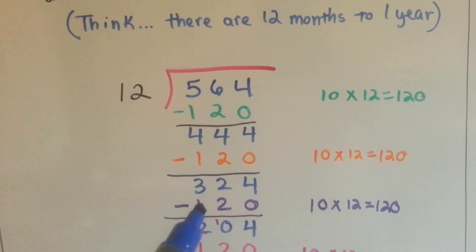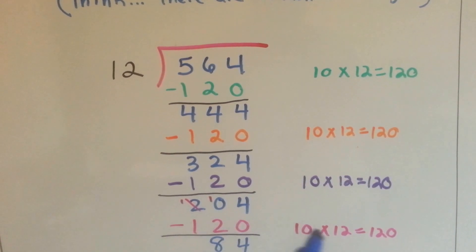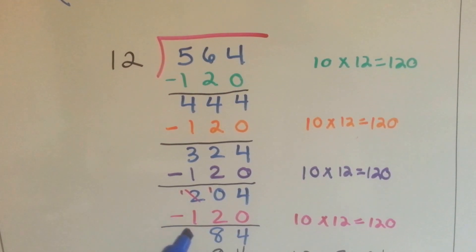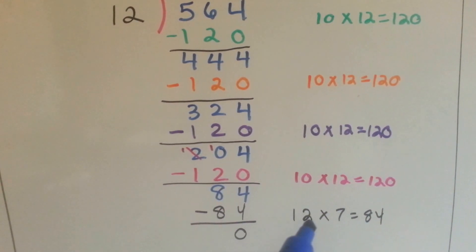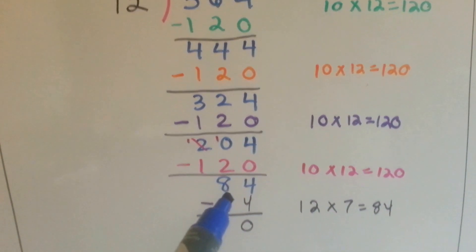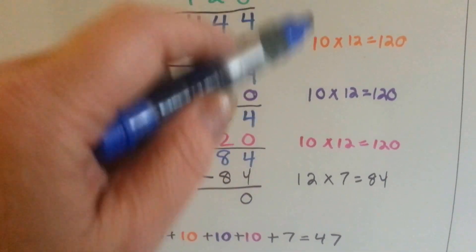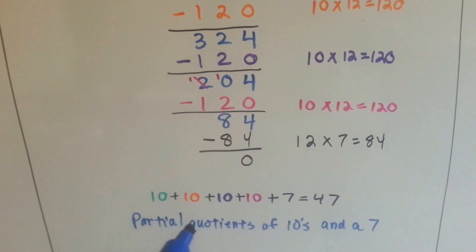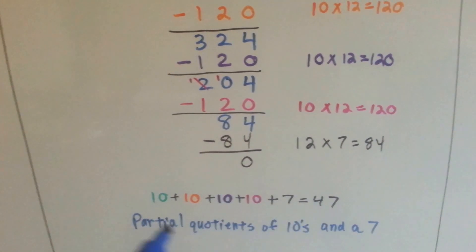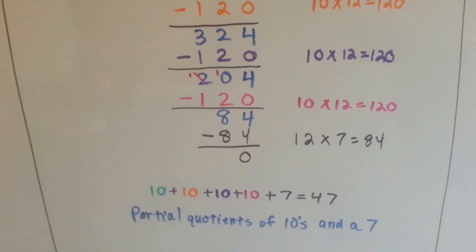So I know I can take another one away. That brings us to 204. I can still take another one away. That brings us to 84. So now, 12 times 7 is 84. I can add the 10 plus 10 plus 10 plus 10 that we got all the 120s with, plus that 7, and I know that it's 47. So partial quotients of 10 and a 7 got us the answer.